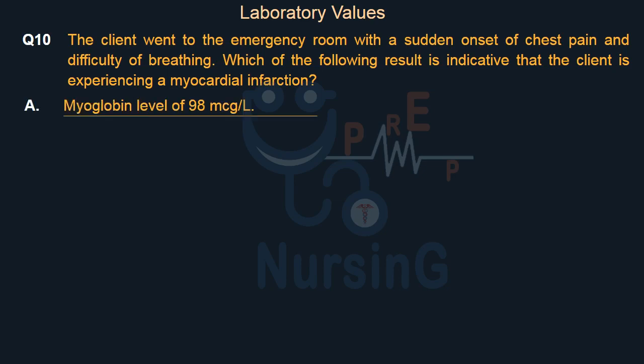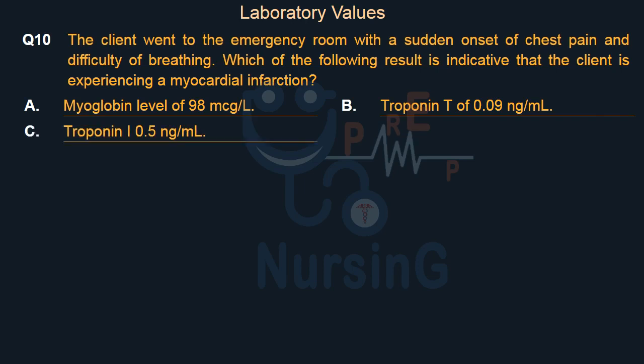Option A: Myoglobin level of 98 micrograms/L. Option B: Troponin T of 0.09 nanograms per milliliter. Option C: Troponin I of 0.5 nanograms per milliliter. Option D: Creatine kinase (CKMB) 155 units/L.